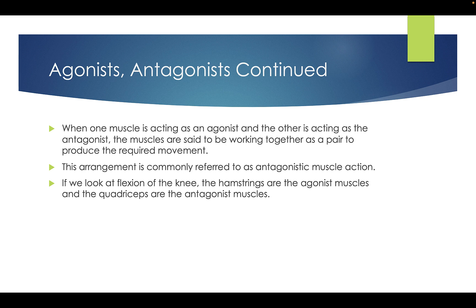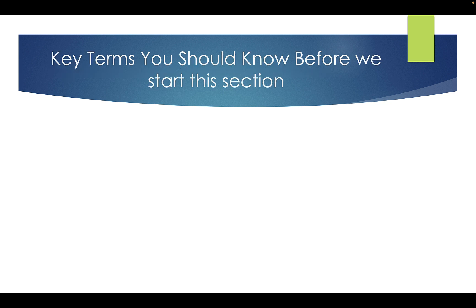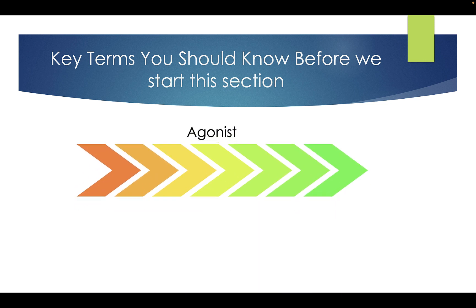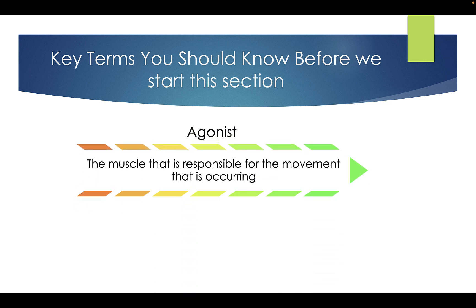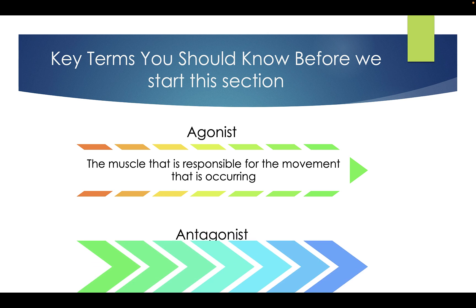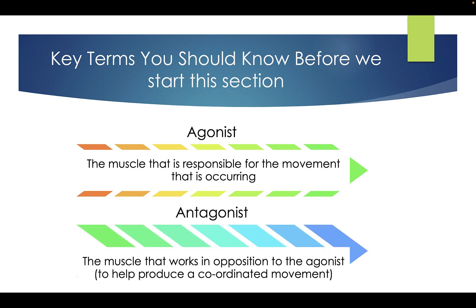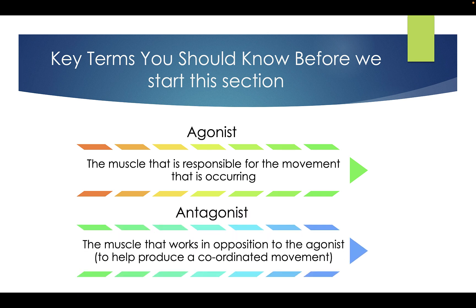If we look at the flexion of the knee, the hamstrings are the agonist muscles and the quadriceps are the antagonist muscle. Key terms you should know: Agonist — the muscle that is responsible for the movement that is occurring. Antagonist — the muscle that works in opposition to the agonist to help produce a coordinated movement.